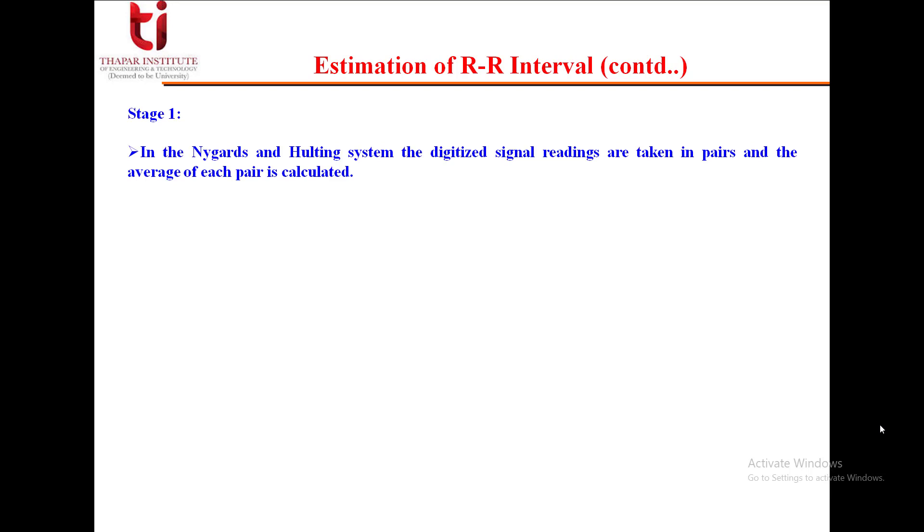In stage 1, in the Nygaards and Halting system, the digitized signal readings are taken in pairs and the average of each pair is calculated. This averaging process reduces the effects of mains fluctuation and voltage spikes from chest muscle activity.